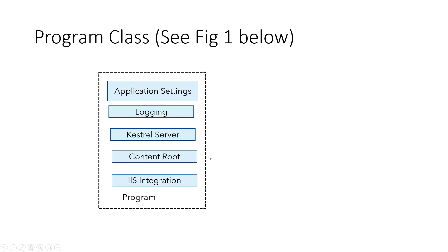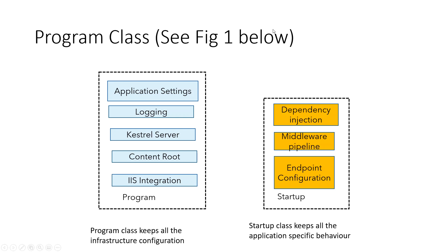Looking at the diagram, we can see two blocks. The first is the program class, which keeps all the infrastructure configuration — application settings, logging, the internal Kestrel server, content root, and IIS integration. The second block is the startup class, which keeps all the application-specific behavior such as dependency injection, the middleware pipeline, and endpoint configuration.